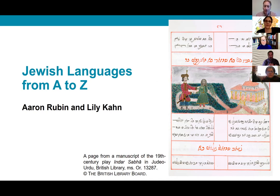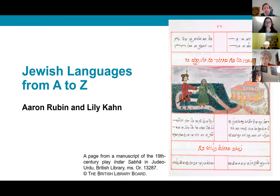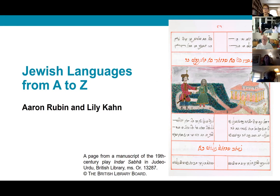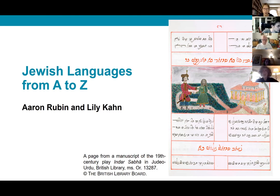So we're going to give you a little bit of an overview of our new book, Jewish Languages from A to Z. We first wanted to give you background about how this book came about. In 2016, Aaron and I published a co-edited volume called The Handbook of Jewish Languages, published by Brill. That book was designed primarily for an academic audience of linguists, and it was meant to introduce scholars to the really exciting and diverse world of Jewish languages of the diaspora.